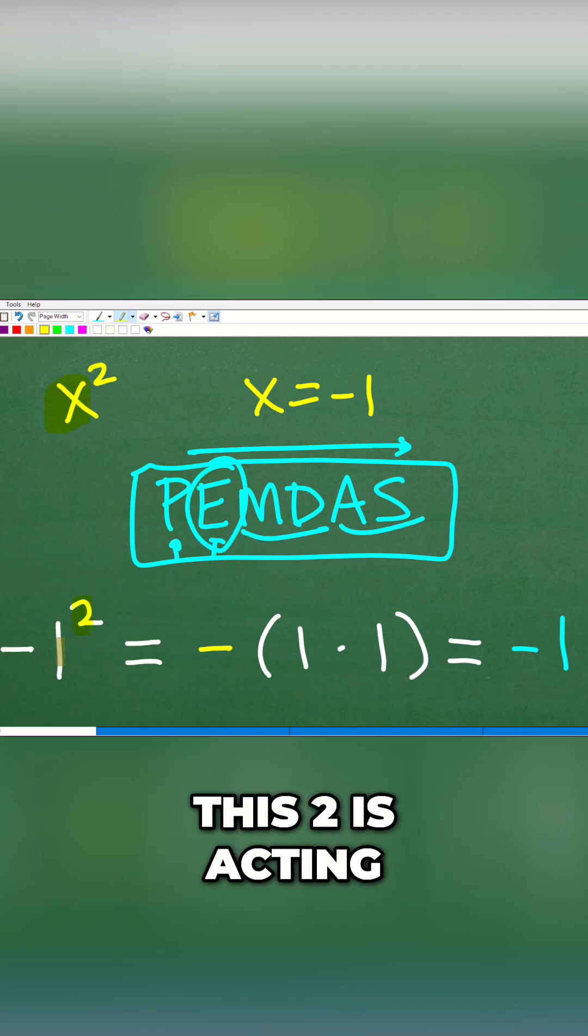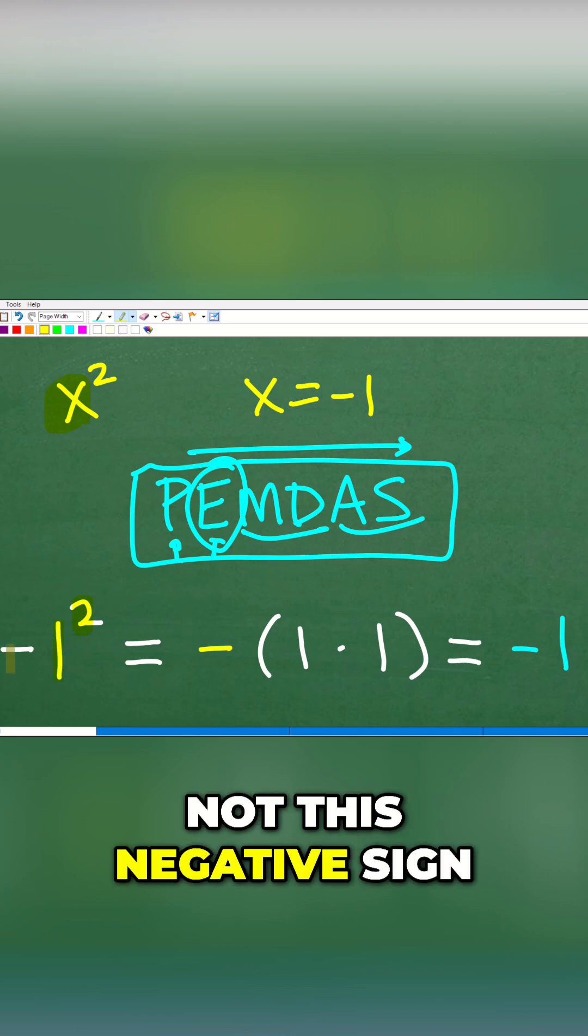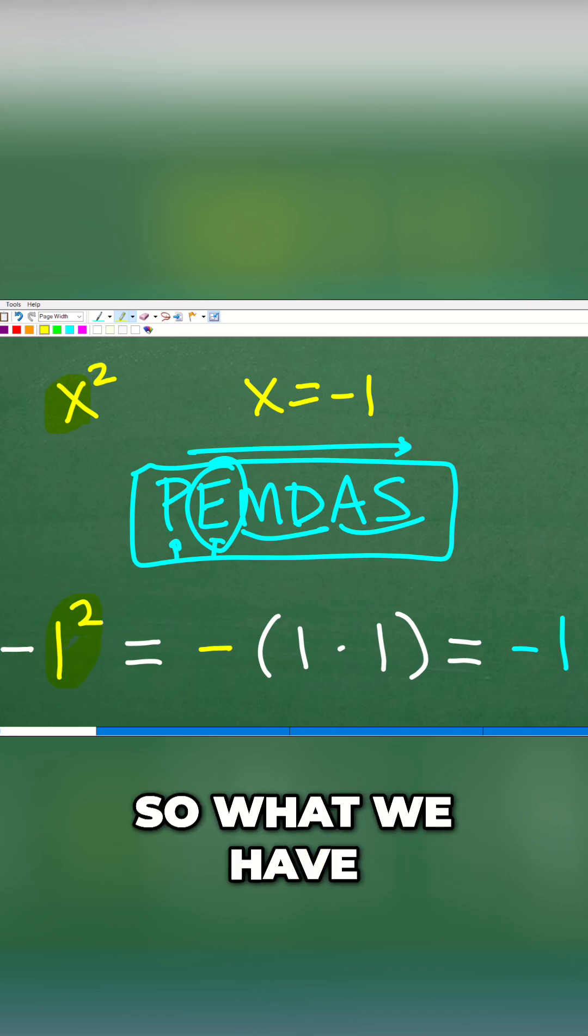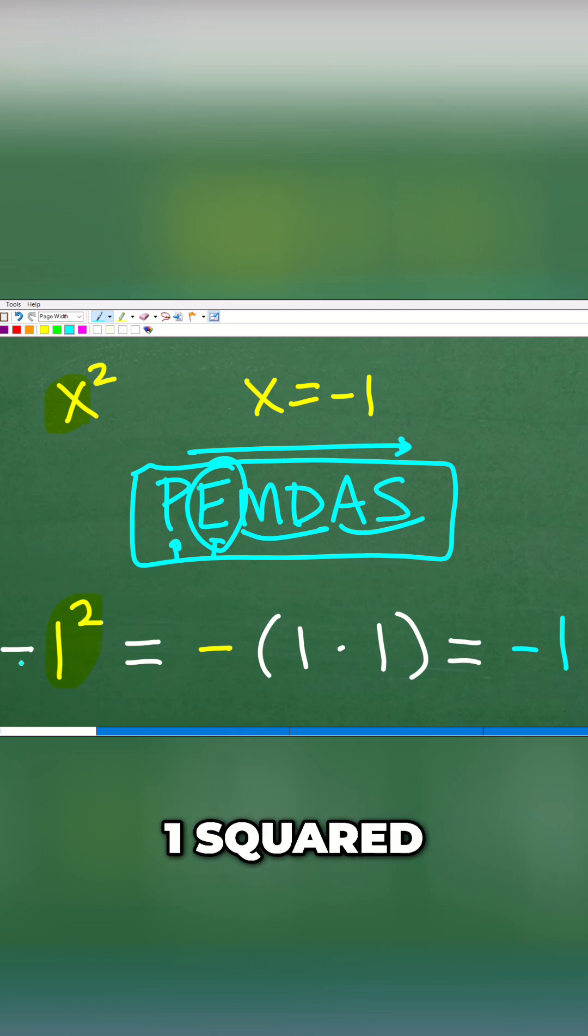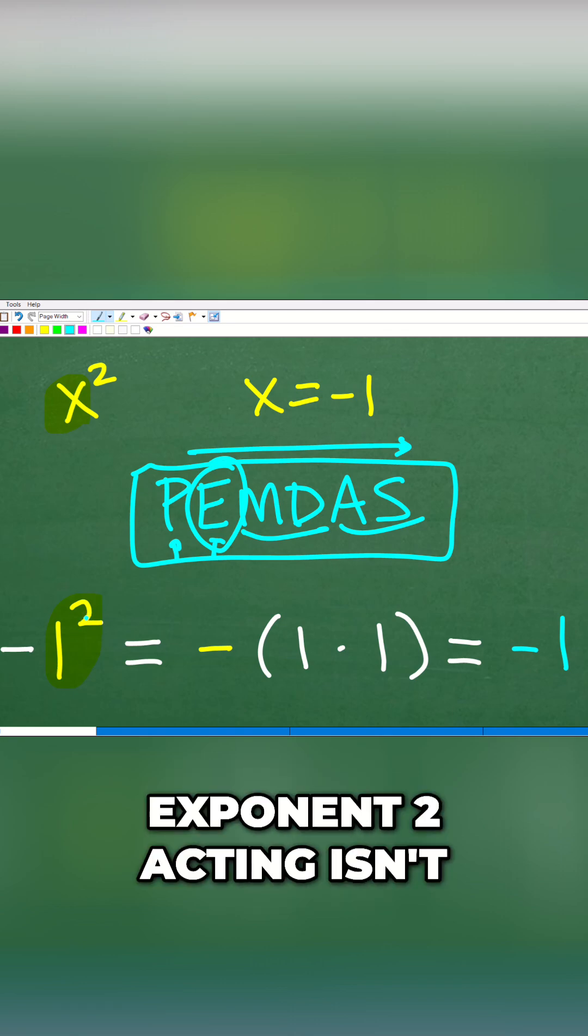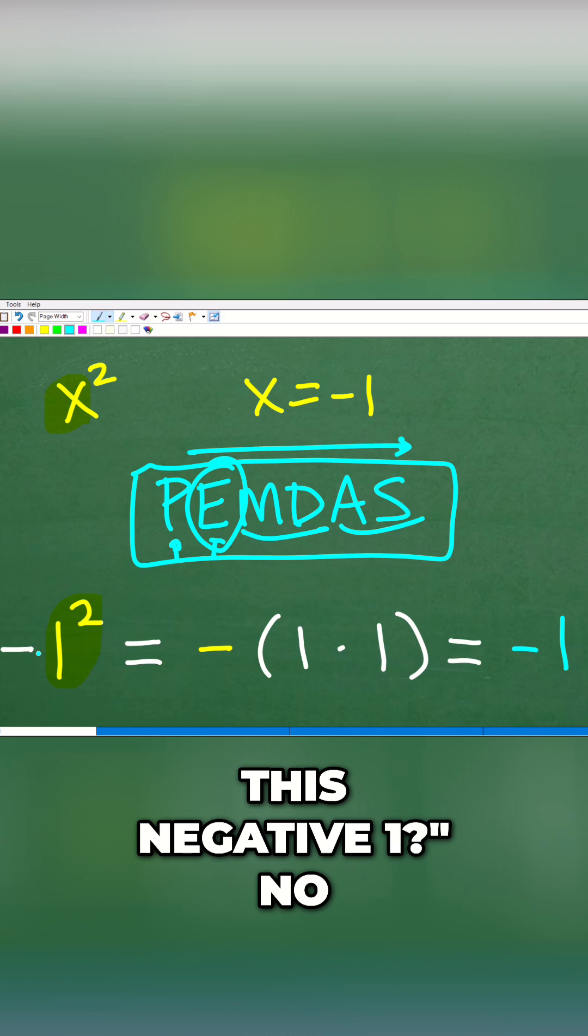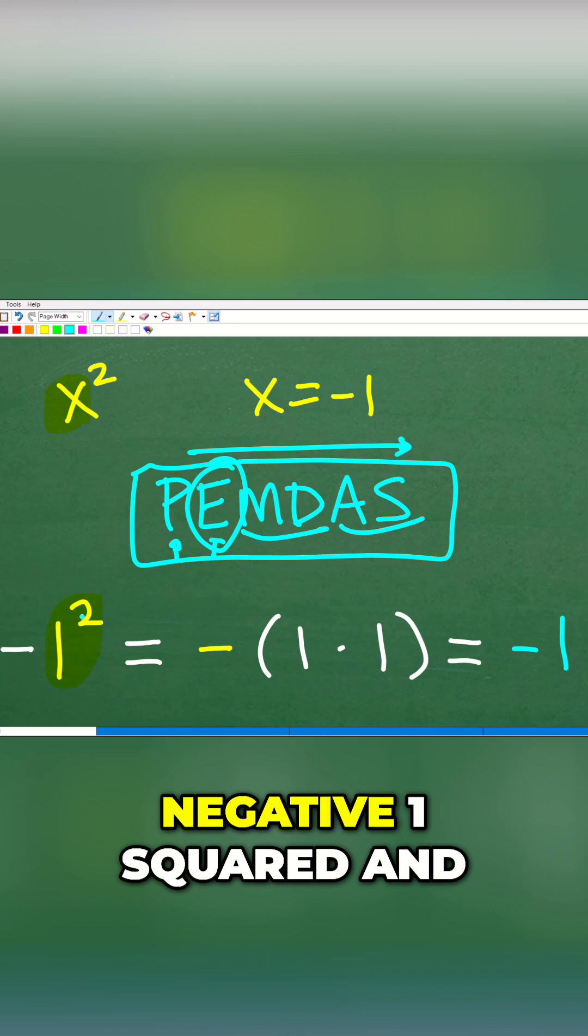So the power, this two, is acting upon this one, not this negative sign. So what we have to do first is this one squared. Now you might be saying, well, isn't this exponent two acting, isn't this negative one? No, not the way it's written. And I'll show you how to distinguish between negative one squared and this expression.